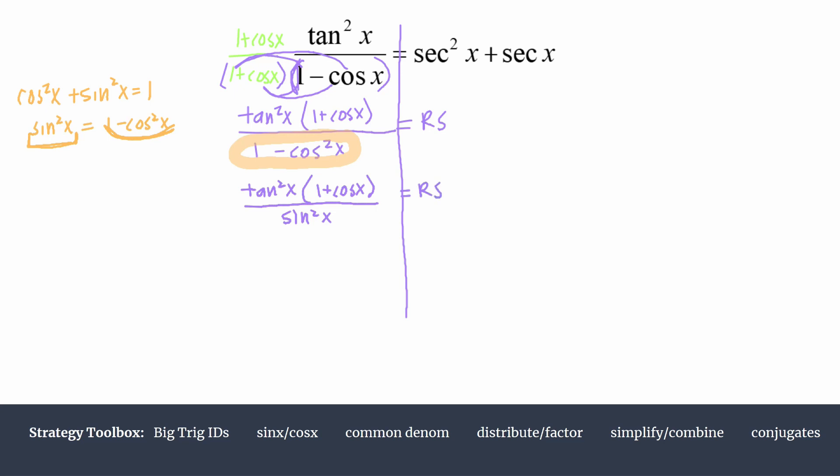Now we need to be a little bit creative here. We know we eventually want this to end up as two terms. We see this 1 plus cosine x—that's kind of the start of those two terms.